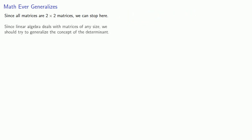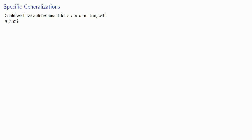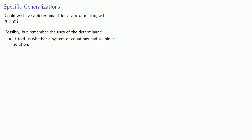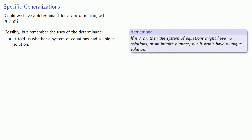Well, since linear algebra deals with matrices of any size, we should try to generalize the concept of the determinant. Could we have a determinant for an n by m matrix with n not equal to m? Well, possibly. But remember the uses of the determinant — it told us whether a system of equations had a unique solution. But if n is not equal to m, then the system of equations might have no solutions or an infinite number, but it won't have a unique solution.